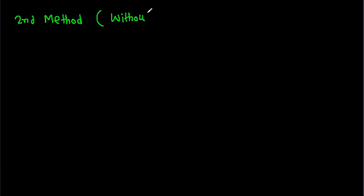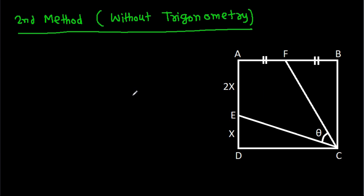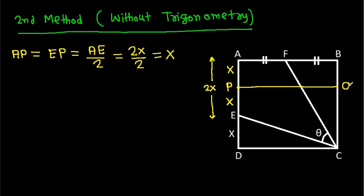In the second method, we have AE equal to 2x. Suppose point P is such that AP equals EP, so AP equals AE over 2 equals 2x over 2 equals x. So AP is x and PE is x. If we draw PQ perpendicular to AE, and since ABCD is a square, this angle will be 90 degrees.